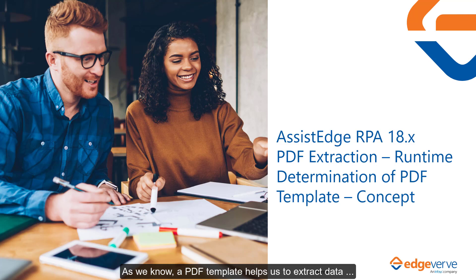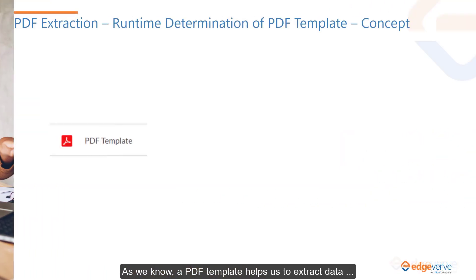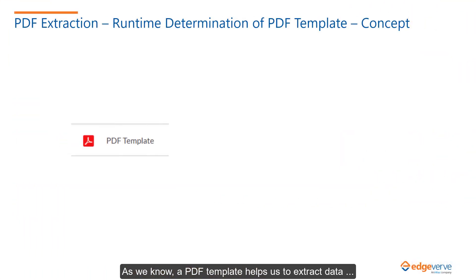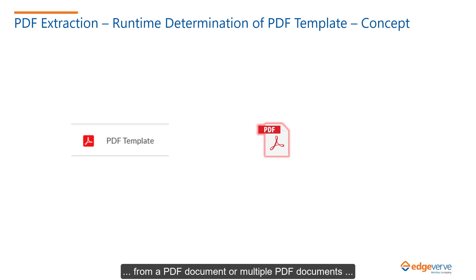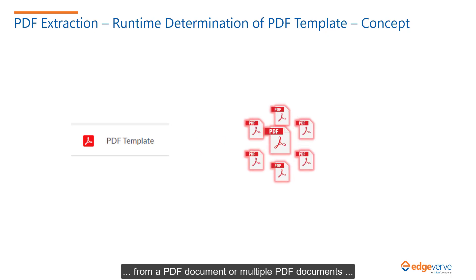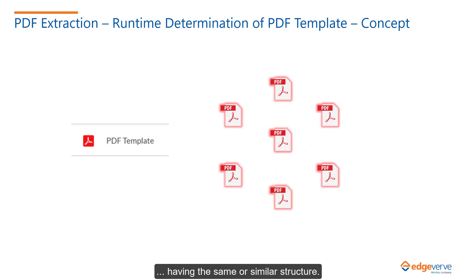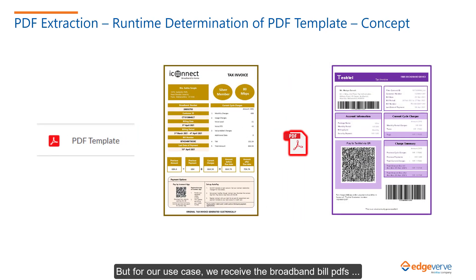As we know, a PDF template helps us to extract data from a PDF document or multiple PDF documents having the same or similar structure. But for our use case, we receive the broadband bill PDFs of iConnect and Tectel in different structures.